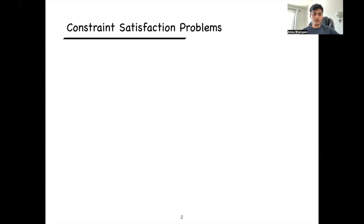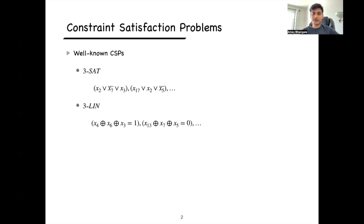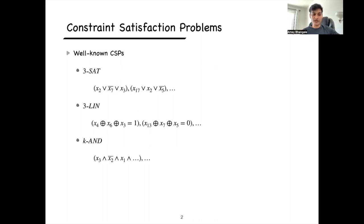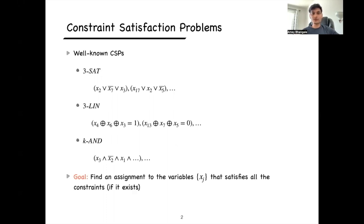Let me first mention some well-known constraint satisfaction problems. 3SAT is one type of CSP where every constraint is a disjunction of three literals. 3Lin is another where every constraint is a linear equation involving three variables over some abelian group. Then there is KN where the arity of the predicate is K, where you take K literals and take the AND of all K literals. The goal is to find an assignment to the variables that satisfies all the constraints if it exists.